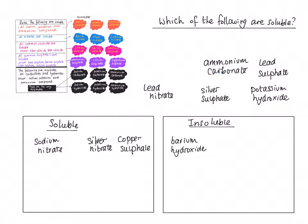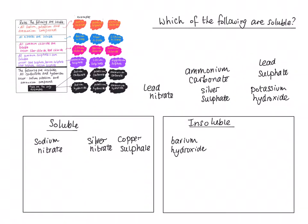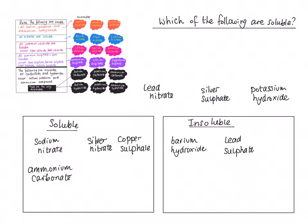Ammonium carbonate: all sodium, potassium, and ammonium compounds are soluble, and the rule states that all carbonates and hydroxides are insoluble except sodium, potassium, and ammonium. So ammonium carbonate is soluble. Lead sulfate: all common sulfates are soluble, except lead sulfate. Because this is on the exceptions list, lead sulfate is insoluble.